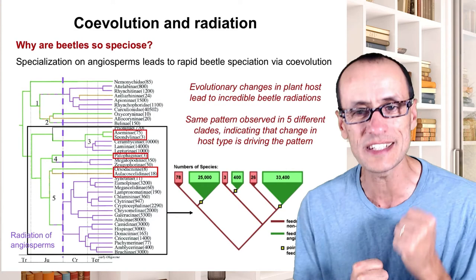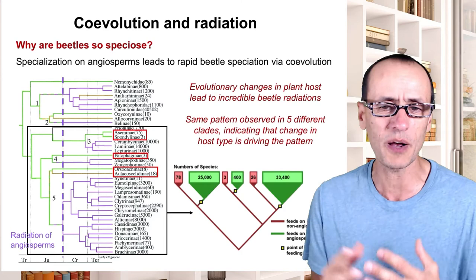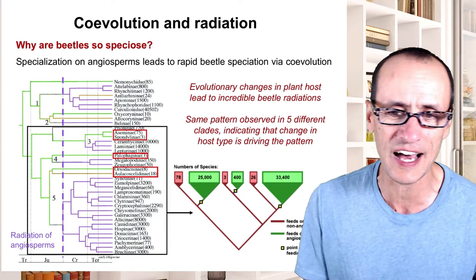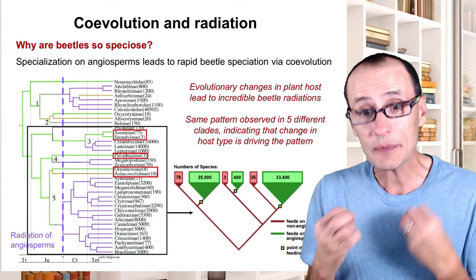This idea of escalation of defenses was drawn from what governments were doing in response to each other during the Cold War. If the Russians have three nukes, then we'd better have five. If the Americans have five, then we'd better have ten, and so on. The same kind of mentality was brought to bear on these ecological systems.